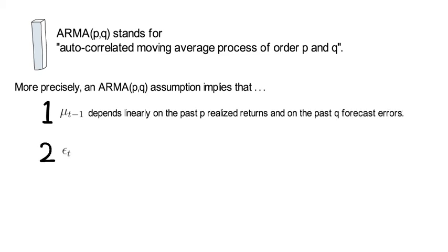And second, the εt is an unforecastable IID random variable.